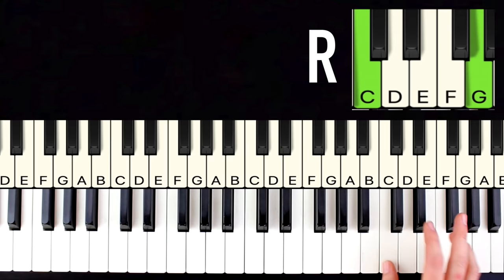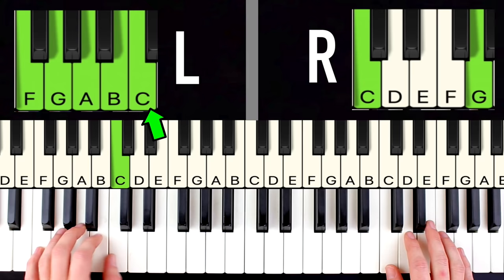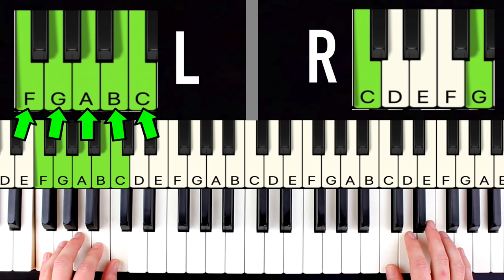Then for your left hand all you do is find two more black notes, go one to the left, and you're going to put your thumb here. And again we can count down five notes, so one two three four five, and you can play any of these five notes at the same time you're playing your right hand and it's always going to sound good. Let me show you what I mean.